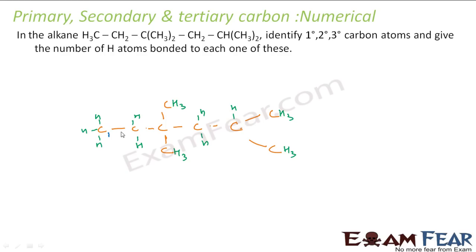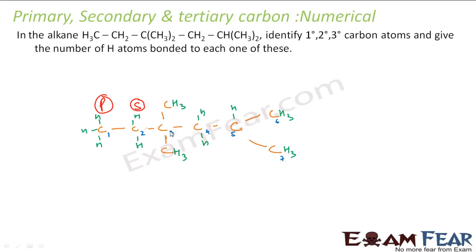Let me number the carbons so you can follow easily: one, two, three, four, five, six, and seven. Carbon 1 has one carbon attached — that is carbon 2 — so carbon 1 is primary. Carbon 2 has two carbons attached — carbon 1 and carbon 3 — so carbon 2 is secondary. Carbon 3 has four carbons attached, so it is a quaternary carbon.